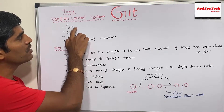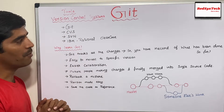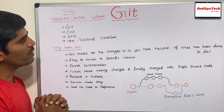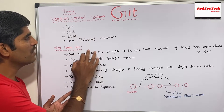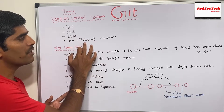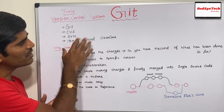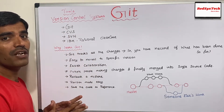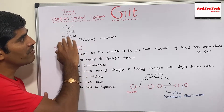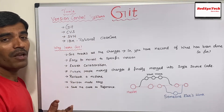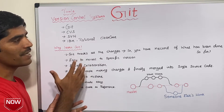Git is always the best in the market for achieving a distributed version control system. We also have some other products like CVS, SVN, and IBM's Rational ClearCase. These are other tools available in the market to achieve version control system, but in this video we are going to learn about only Git.